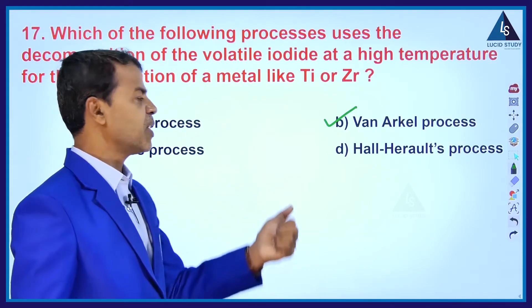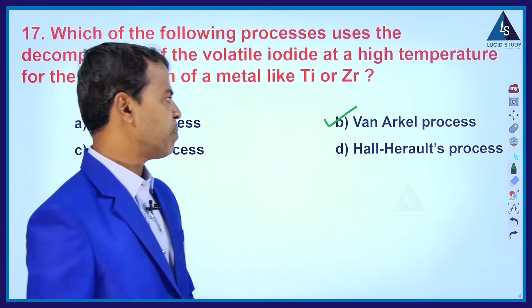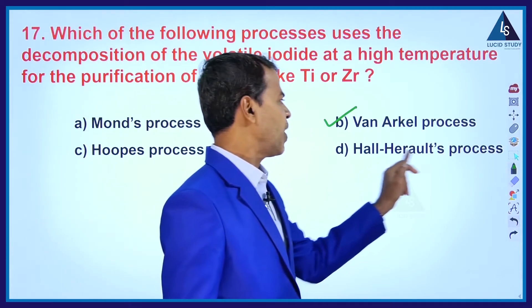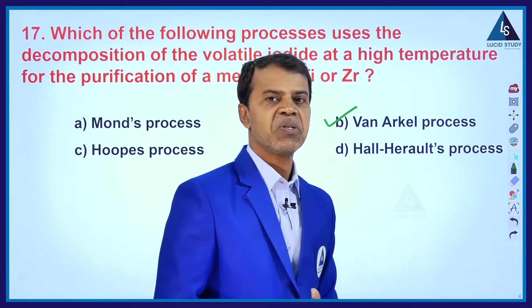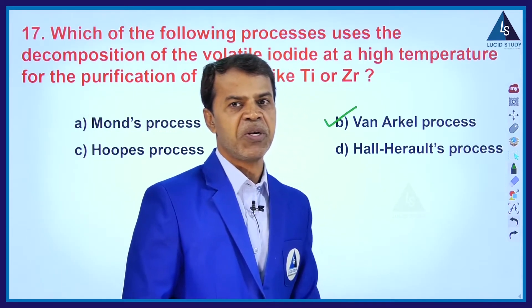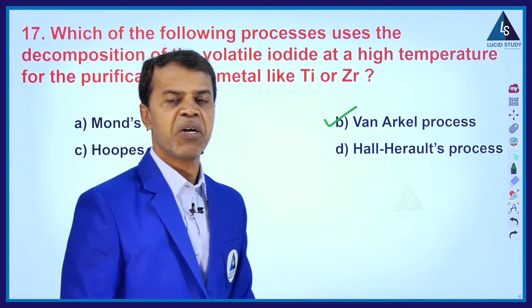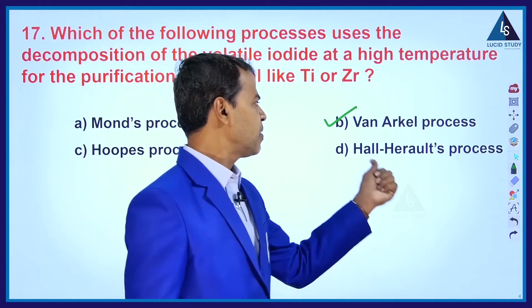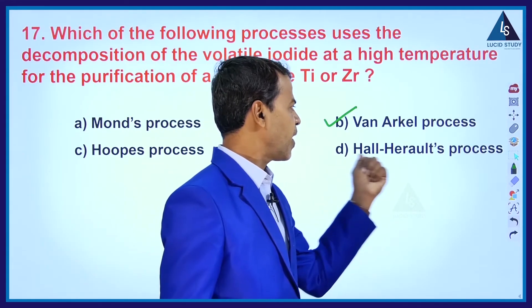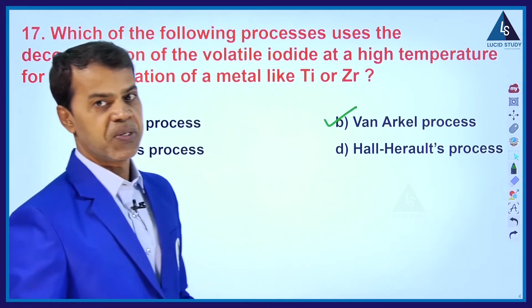Hoope's process is used in the refining and extraction of crude aluminium. The electrolytic reduction of aluminium is carried out by Hoope's process.